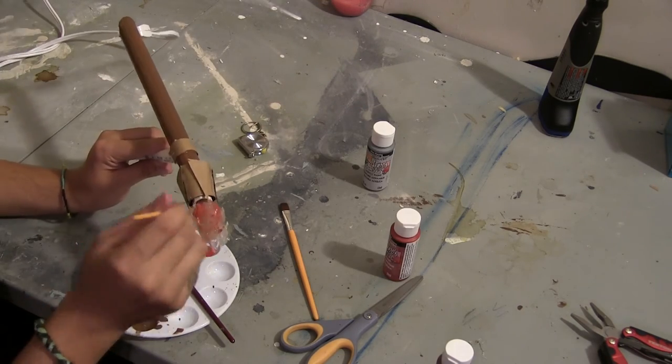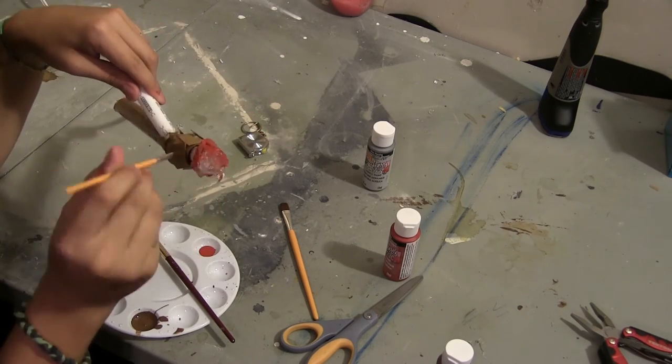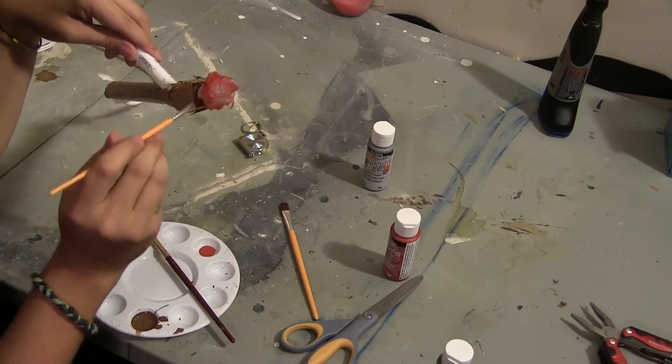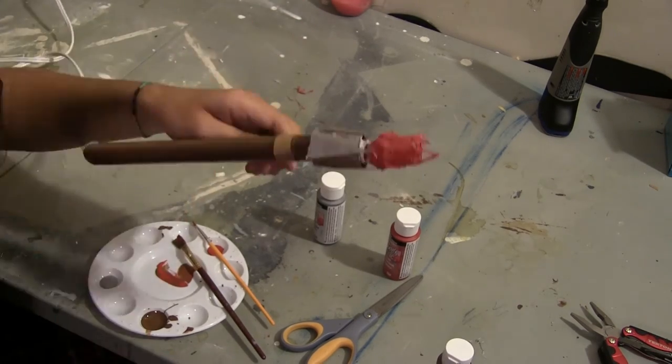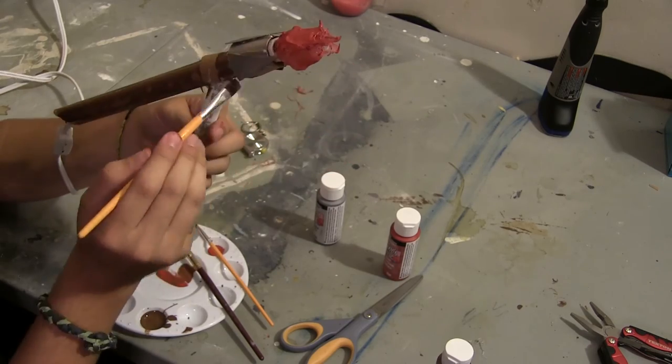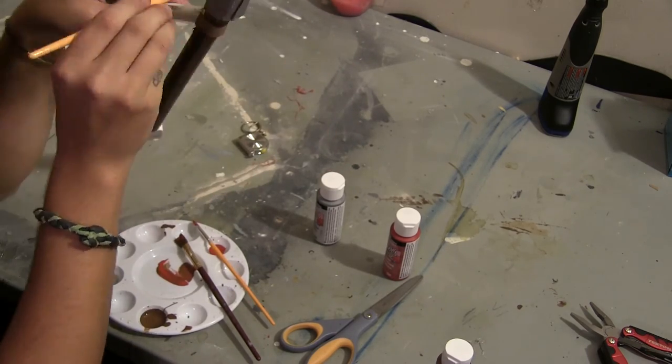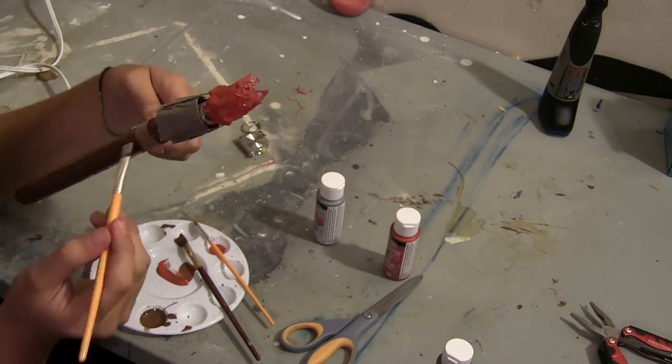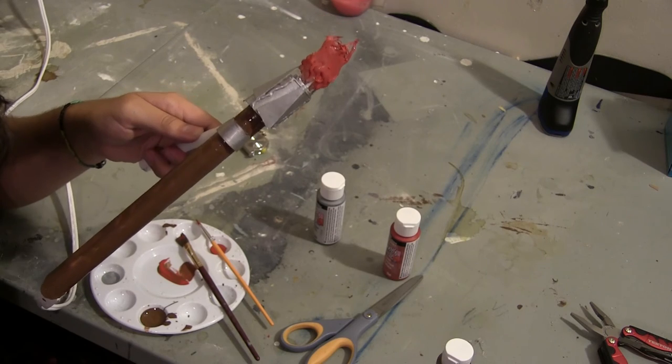And now we're painting the hot glue red very lightly. Just covering the whole thing in red with a very thin coat. And now we're painting the cardboard parts with a silver color paint. So it should look like this.